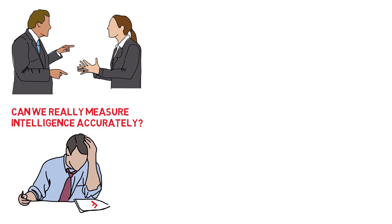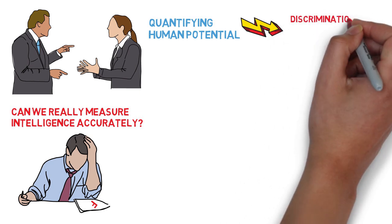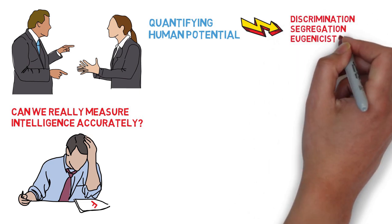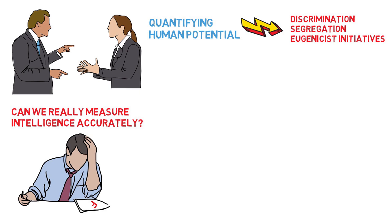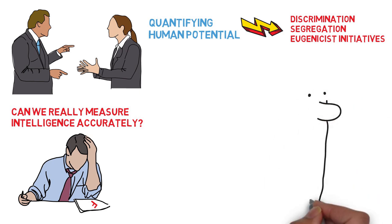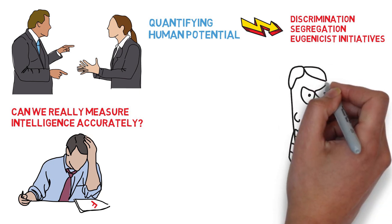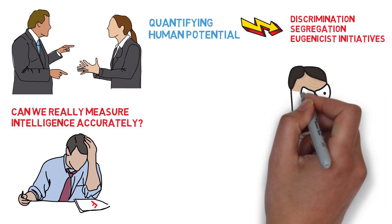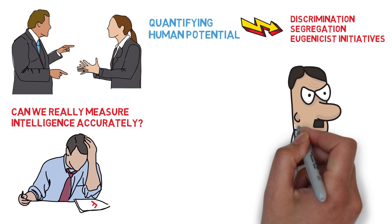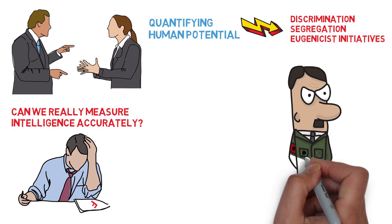Most importantly, the dark side of our history has demonstrated that quantifying human potential by measuring intelligence has led to discrimination, segregation and eugenist initiatives. For instance, during the second world war, Nazis preached that people with mental retardation were polluters of the Aryan gene pool. In their Nazi campaign of medicalized killing, also called euthanasia...